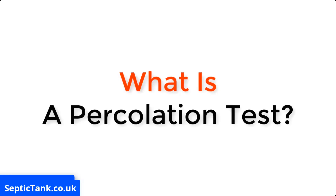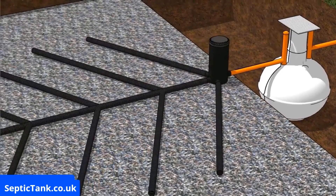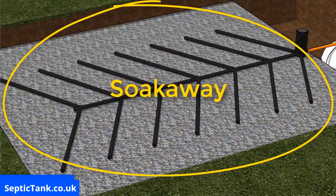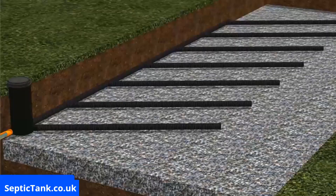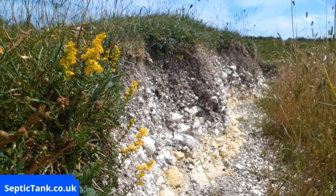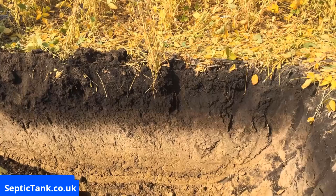So what is a percolation test? A percolation test determines if the ground is suitable for a soakaway or not, and that the wastewater that enters the soakaway from the septic tank can drain away naturally into the soil. Some examples of soil with good percolation characteristics would be chalky soil, sandy soil, or loamy soil.